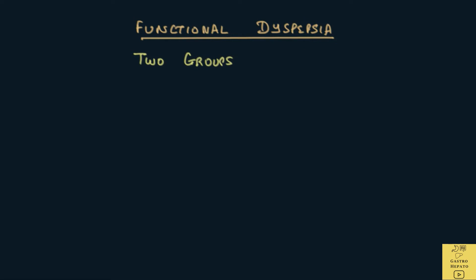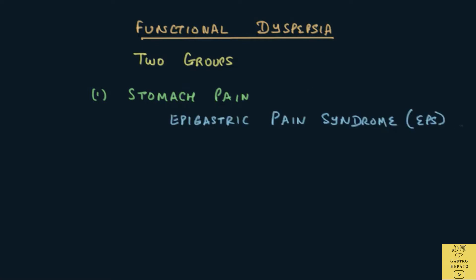Patients with functional dyspepsia can be broadly divided into two groups according to their symptoms. One group is those in whom the main symptom is pain over the stomach area. This group is called the epigastric pain syndrome, or EPS. Epigastric means the area of the stomach. The main mechanism here seems to be hypersensitivity to pain.